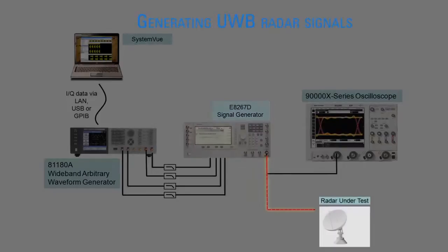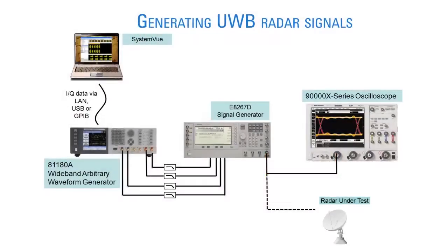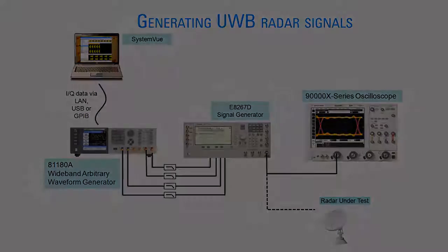This signal can be used directly as an input to test a radar receiver. However, in this presentation we will look at the signal on the 90000 X-Series oscilloscope using the Agilent 89600A vector signal analyzer software. Now let's focus on SystemVue and generating various UWB waveforms.